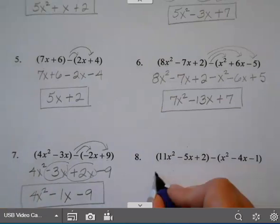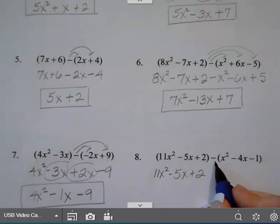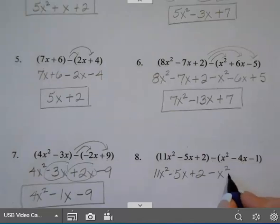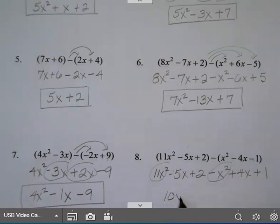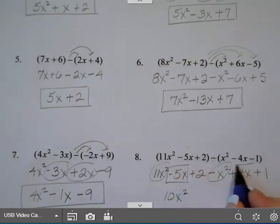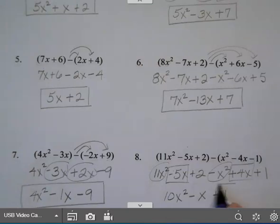Last example. The first set of parentheses does not have a negative in front of it, so I can just drop the parentheses. The second one does, so I need to take the opposite of everything inside: negative x squared; negative negative 4x becomes plus 4x; and the opposite of negative 1 is plus 1. Then I collect my like terms: 11x squared minus 1x squared gives me 10x squared. Negative 5x plus 4x gives me negative 1x — you can write it with or without the 1, either is correct. And then my last term is plus 1.